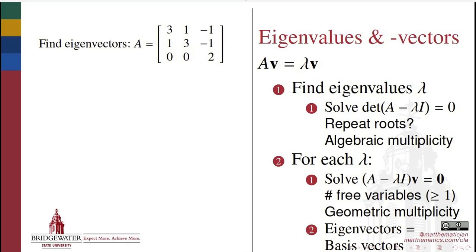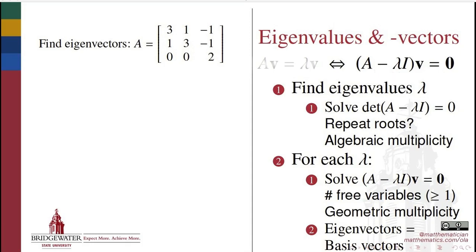To find the eigenvectors of a matrix — and every matrix has at least one — we need to solve the equation AV = λV, which is usually solved by subtracting λV from both sides and instead seeking a non-trivial solution to the matrix equation (A − λI)V = 0.